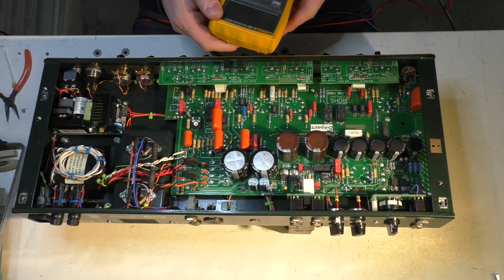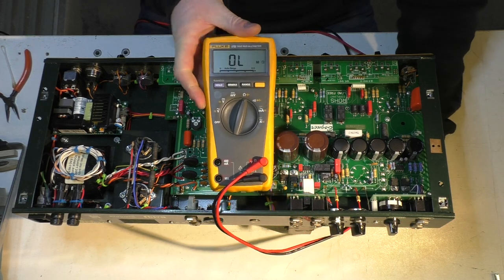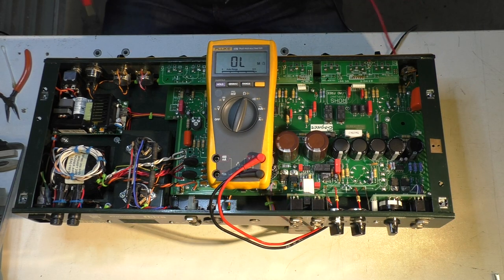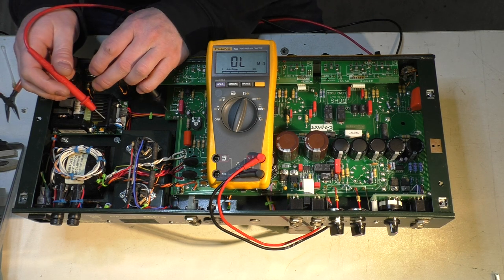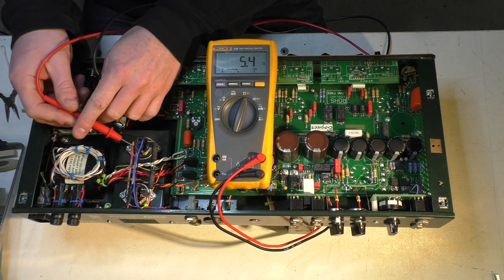But I flicked it on just to test, and of course nothing's as simple as just a simple service. There's always something that needs attention. So here I'm measuring from a ground test point to the cathodes. Both of them are paralleled, both output valves getting 5.4 ohms.